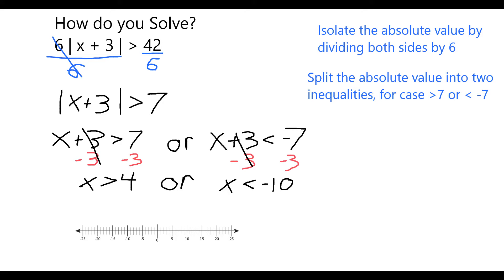If we want to represent this on the number line that means that anything that's to the right of 4 or anything that's to the left or less than negative 10 is a possible solution.